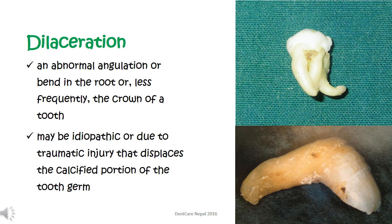Another developmental defect based on shape is dilaceration. It is an abnormal angulation or bend in the root, or less frequently the crown, of a tooth, as seen in the second picture. Dilaceration may be idiopathic or due to traumatic injury that displaces the calcified portion of the tooth. In the figure, the molar has an abnormally angulated or bent root in the apical part, and the bending has begun in the cervical region.